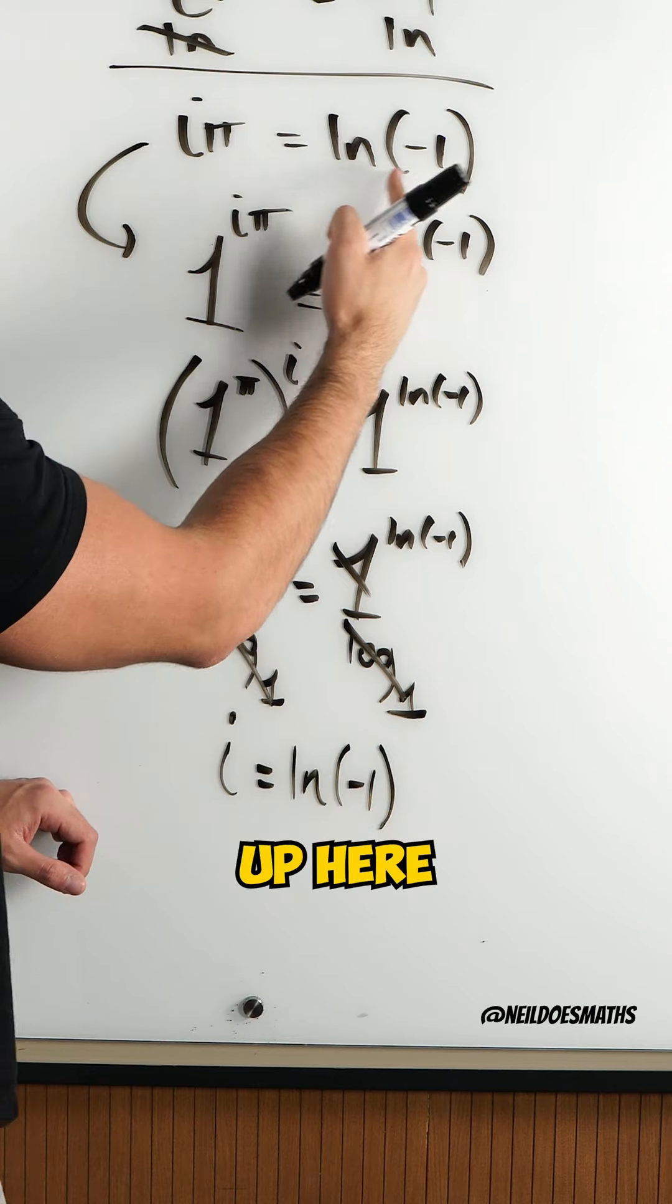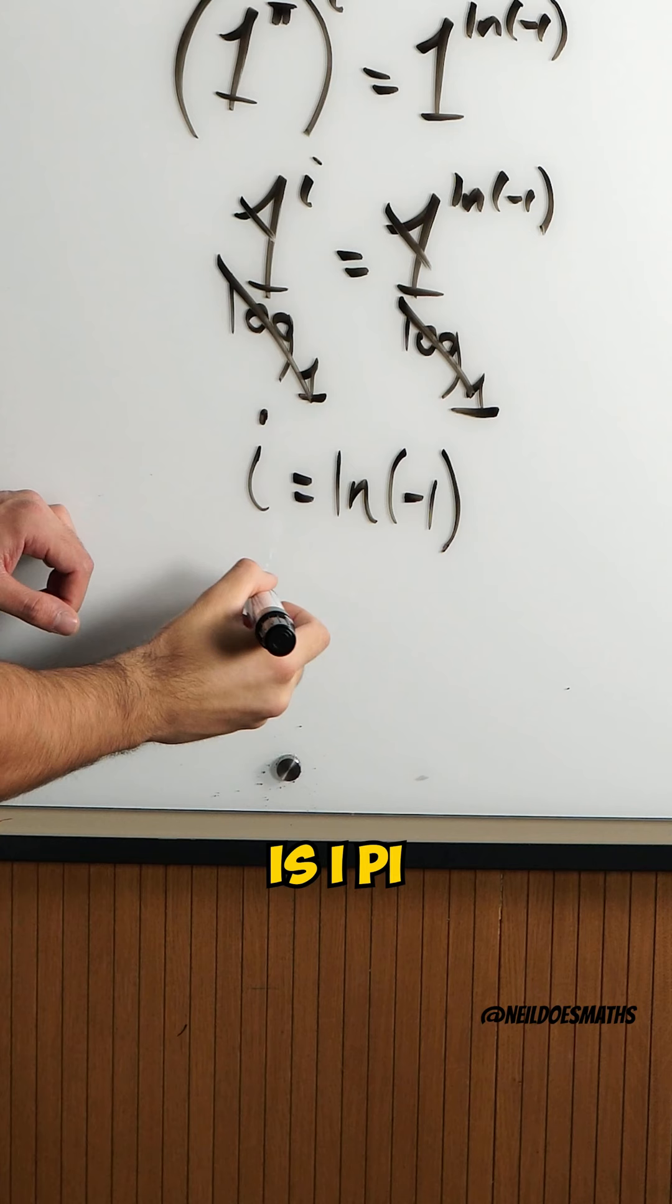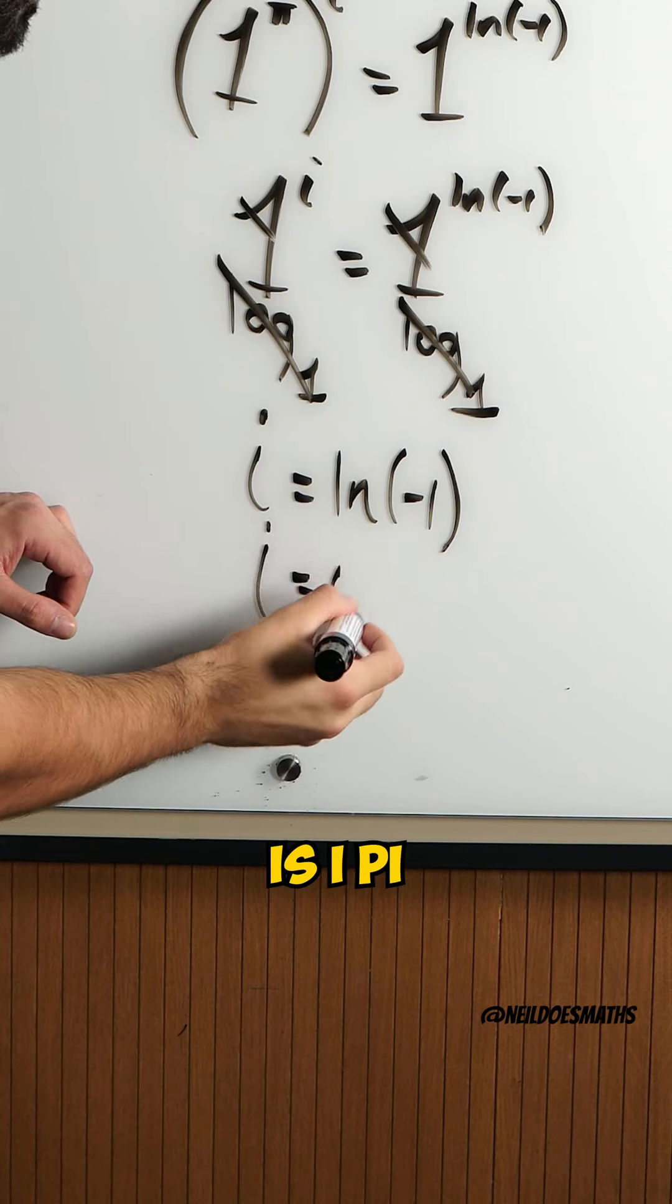But if we go back up here, ln of minus 1 is i pi. So I get i is i pi.